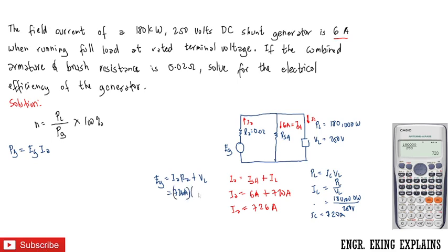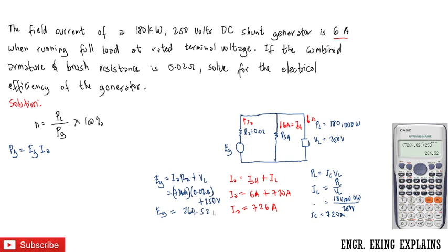Using the calculator: 726 times 0.02 plus 250 equals 264.52 volts. So the generated EMF is 264.52 volts.